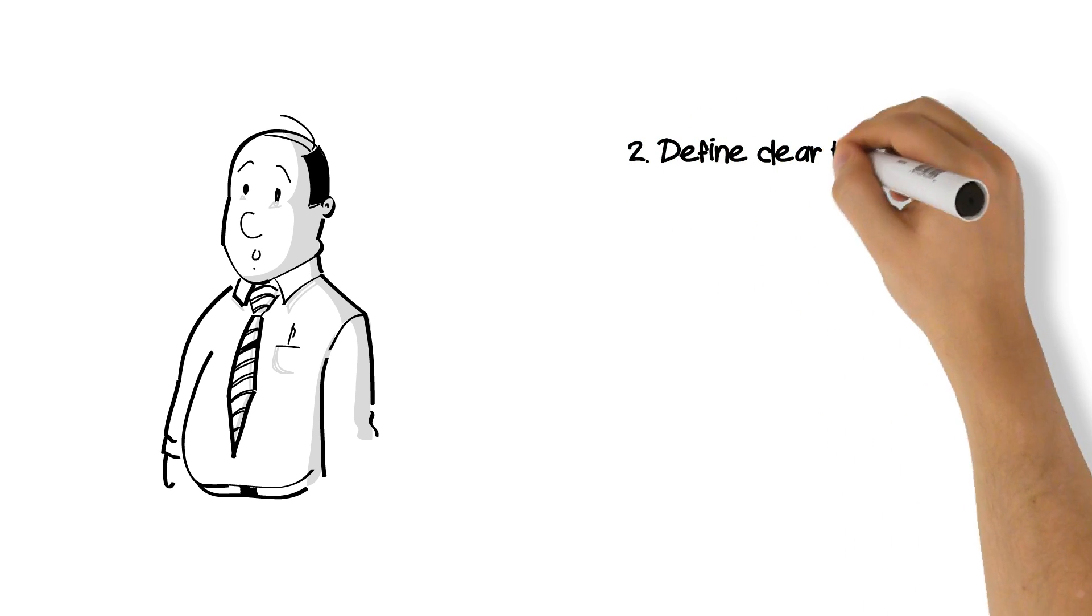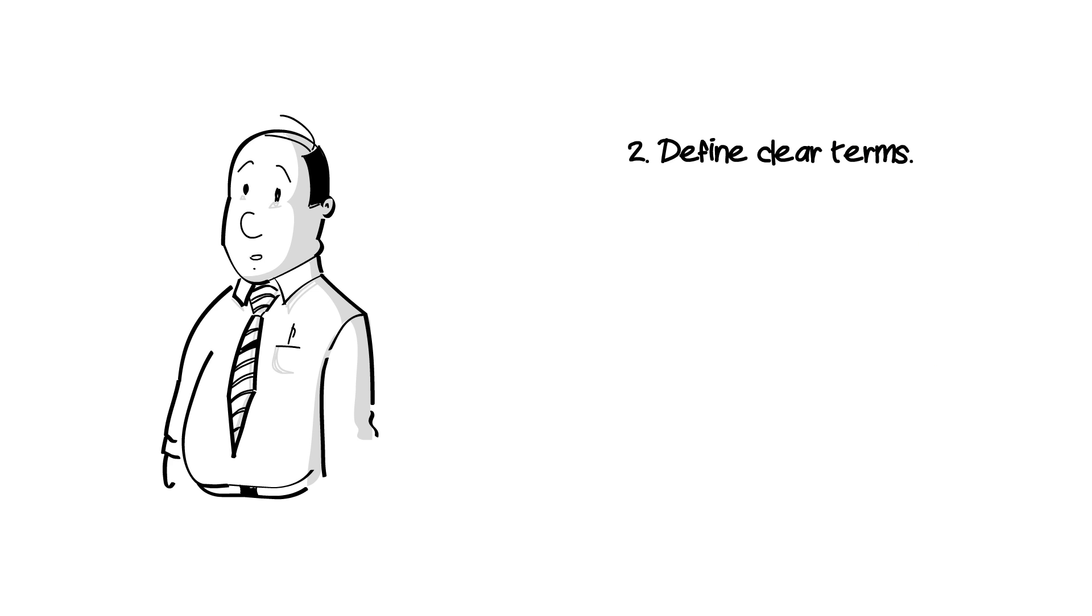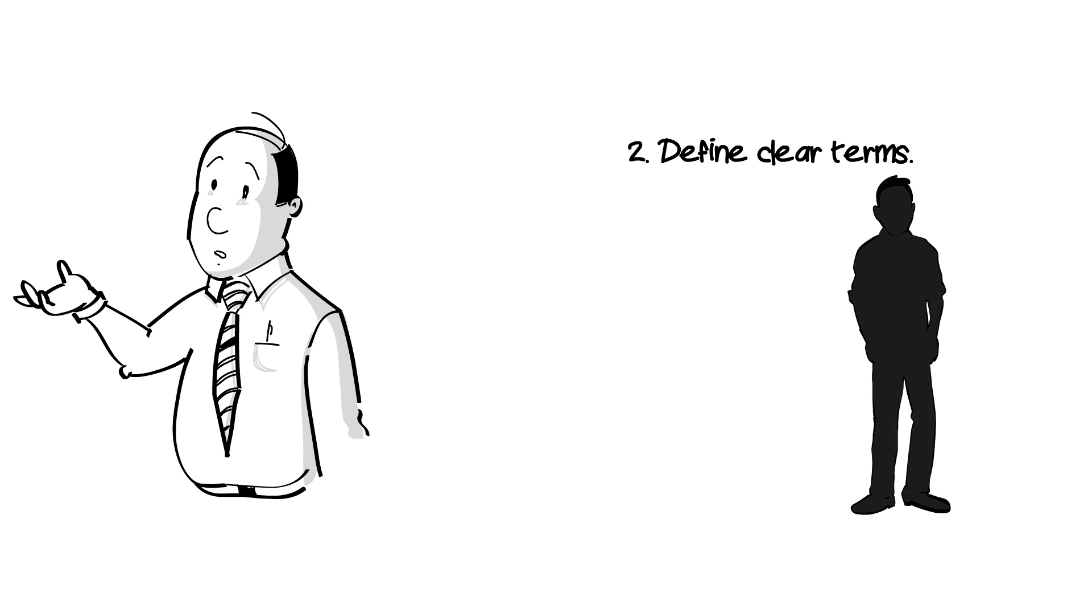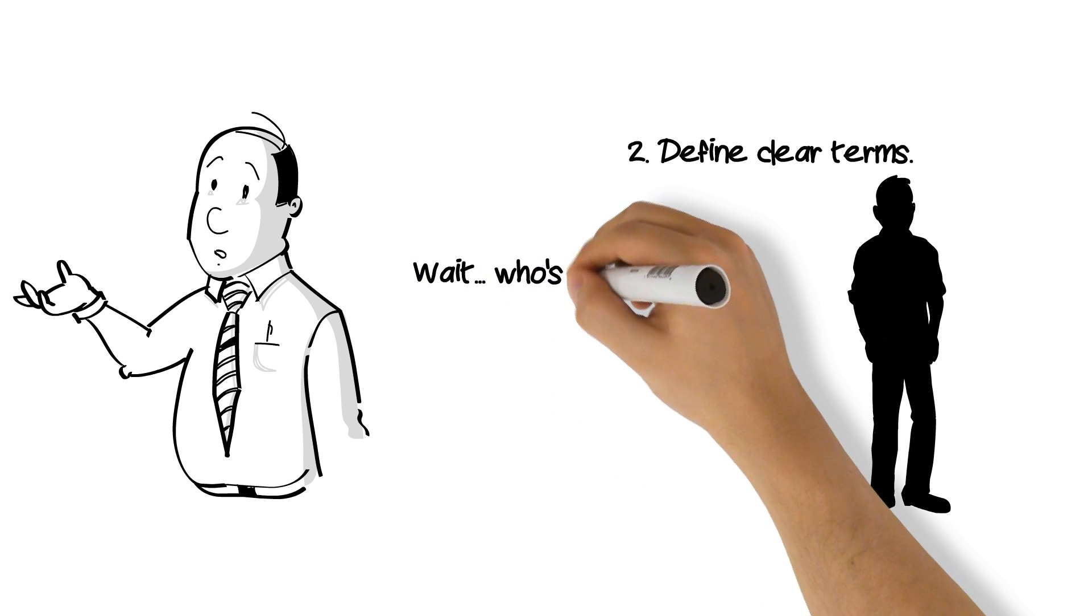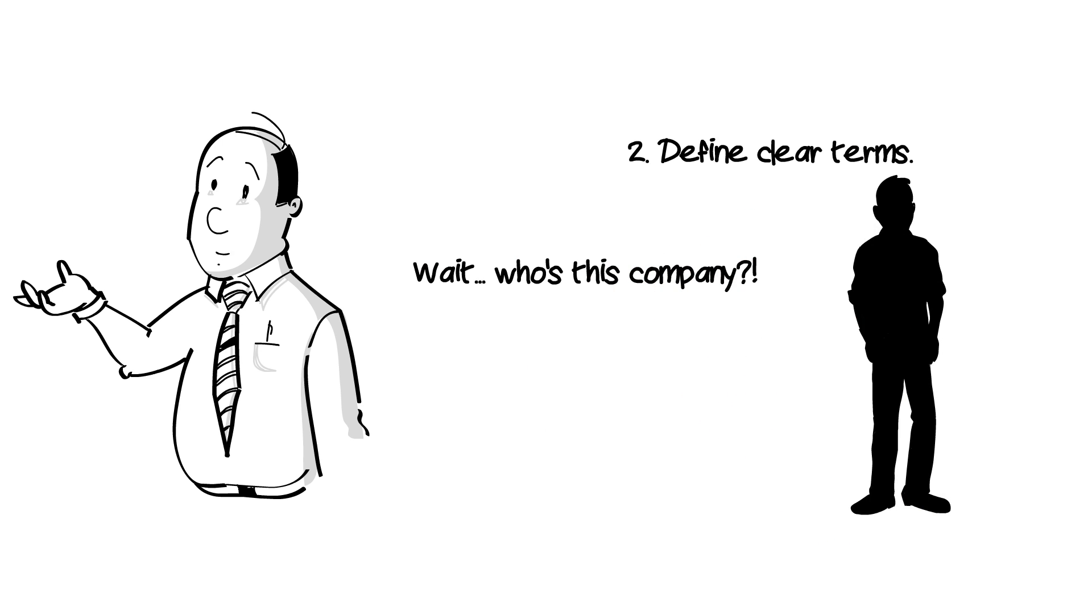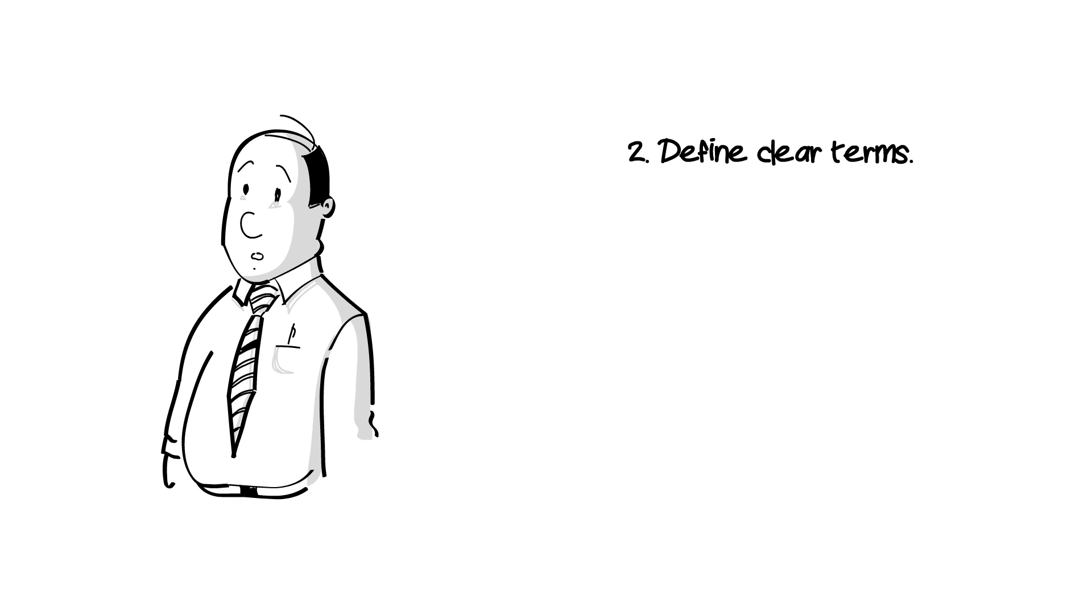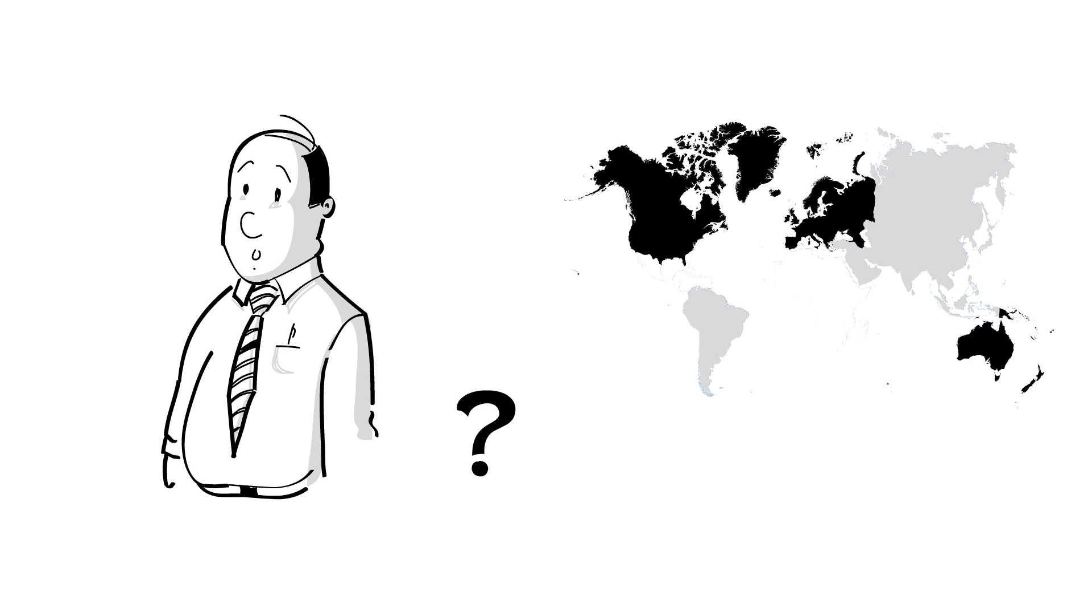2. Define clear terms within your license agreement. Know who the parties are. If you are issuing a patent license to a company, does the company have any affiliates or other entities which may exercise a level of control over your patent? Is there anything else within your patent that could be ambiguous? Are there geographical issues that could be interpreted differently between the parties?